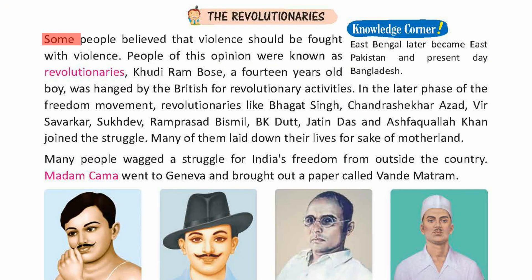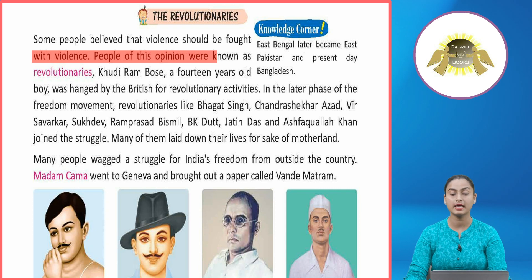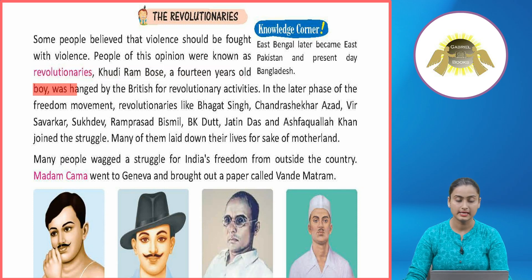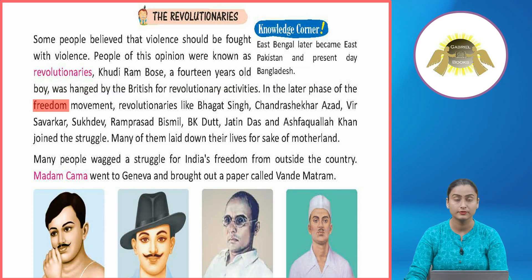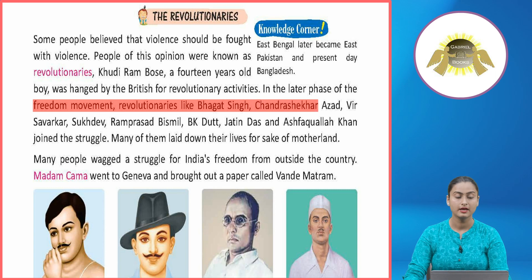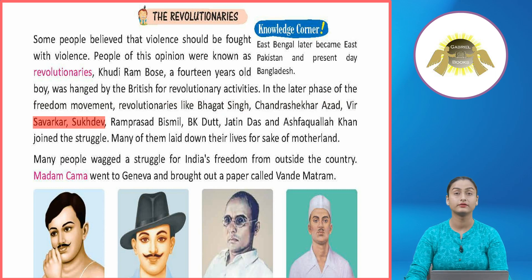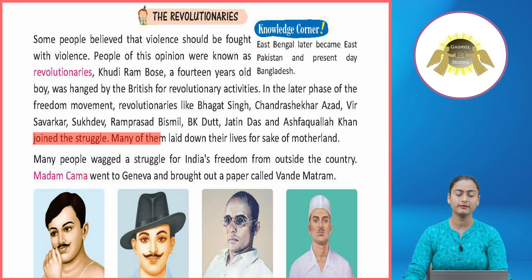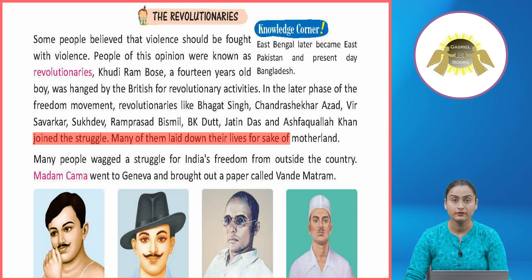The Revolutionaries: Some people believed that violence should be used against the British; people of this opinion were known as revolutionaries. Khudiram Bose, a 14-year-old boy, was hanged by the British for revolutionary activities. In the later phase of the freedom movement, revolutionaries like Bhagat Singh, Chandrashekhar Azad, Veer Savarkar, Sukhdev, Ram Prasad Bismil, B.K. Dutt, Jatin Das, and Ashfaqullah Khan joined the struggle. Many of them laid down their lives for the sake of the motherland.